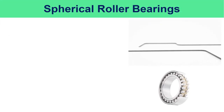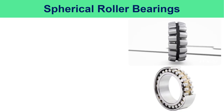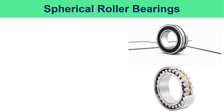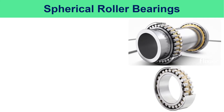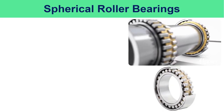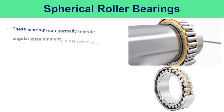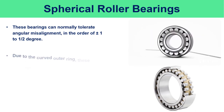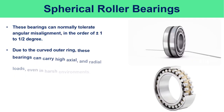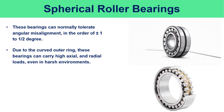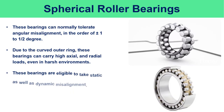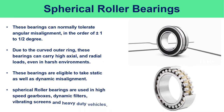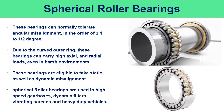Spherical roller bearings consist of an inner ring with two raceways, an outer ring with a common spherical raceway, spherical rollers, cages, and internal guide rings or center rings. These bearings can also be sealed. They can normally tolerate angular misalignment of plus or minus one to one-and-a-half degrees. Due to the curved outer ring, they can carry high axial and radial loads even in harsh environments and accommodate both static and dynamic misalignment. They are used in high-speed gearboxes, vibrating screens, and heavy-duty vehicles.